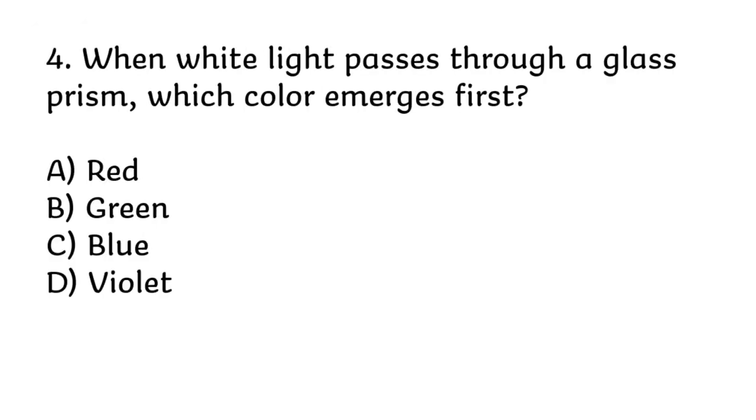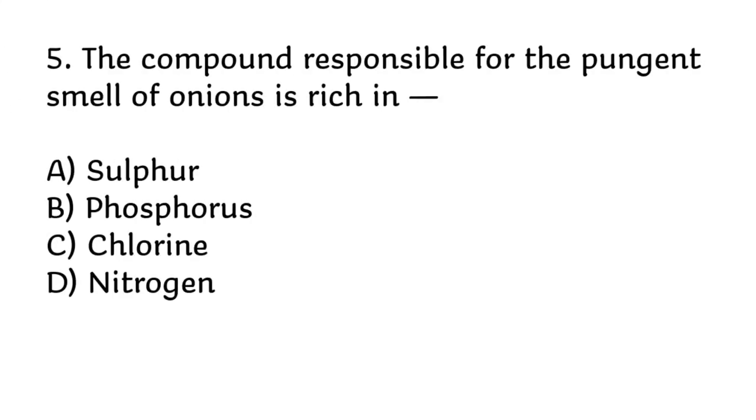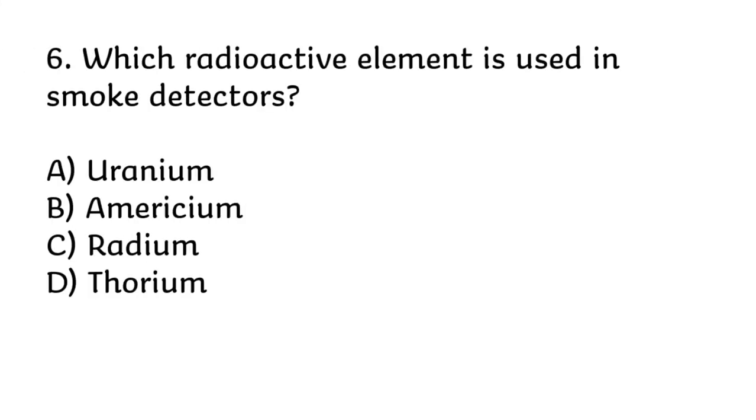When white light passes through a glass prism, which color emerges first? Correct answer is A, red. The compound responsible for the pungent smell of onions is rich in? Correct answer is A, sulphur. Which radioactive element is used in smoke detectors? Correct answer is B, americium.